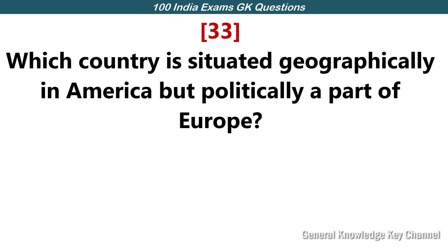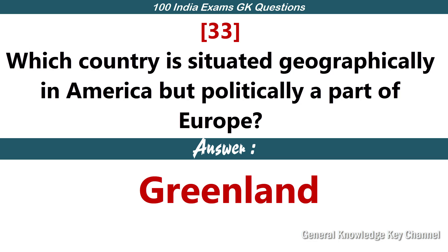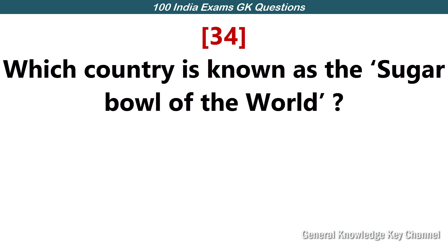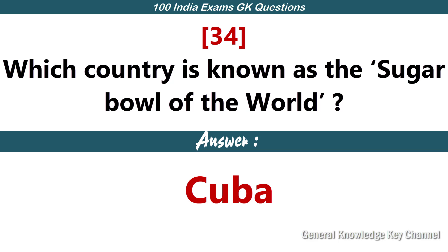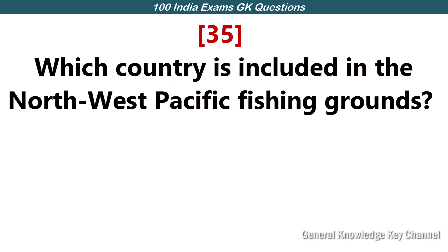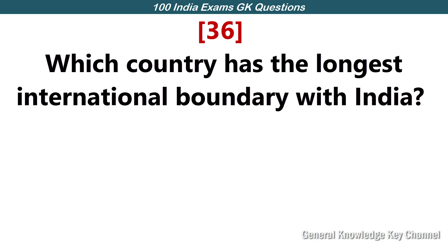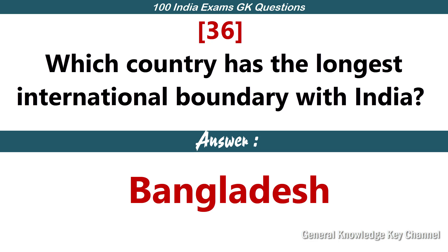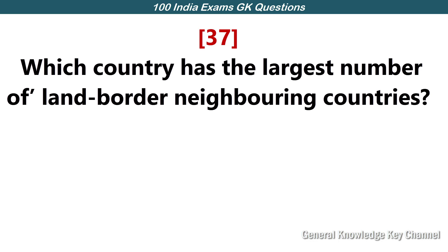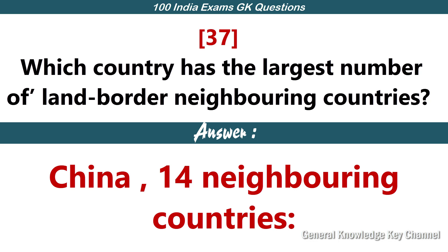Which country is situated geographically in America but politically a part of Europe? Greenland. Which country is known as the sugar bowl of the world? Cuba. Which country is included in the Northwest Pacific fishing grounds? Japan. Which country has the longest international boundary with India? Bangladesh. Which country has the largest number of land border neighboring countries? China, with fourteen neighboring countries.